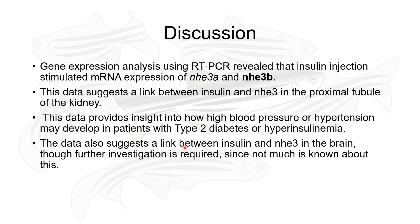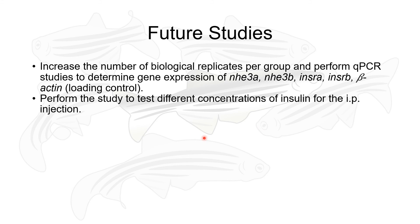The data also suggests a link between insulin and NHE3 activity in the brain, though further investigation is required since not much is known about this relationship. For future studies, I will increase the number of biological replicates per group and perform quantitative PCR studies to determine gene expression of NHE3 and the insulin receptor, normalizing against SPDEF actin. I will also repeat the study testing additional insulin concentrations beyond those used in this study for the intraperitoneal injection.